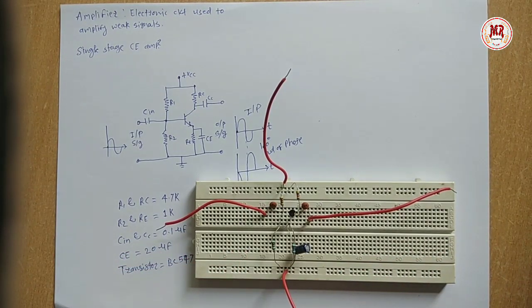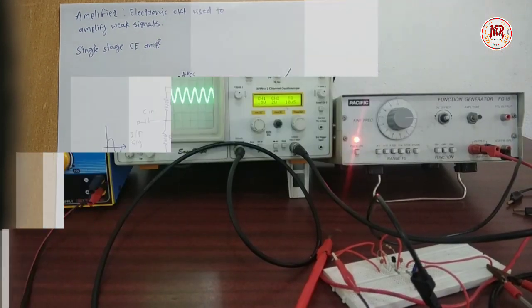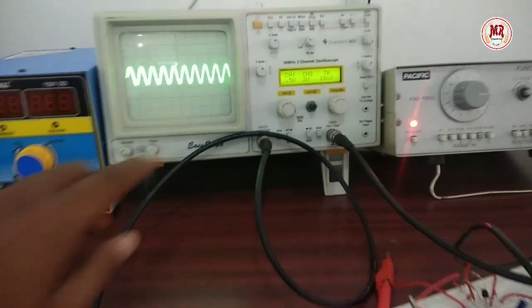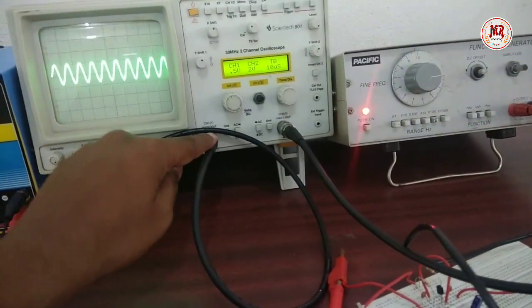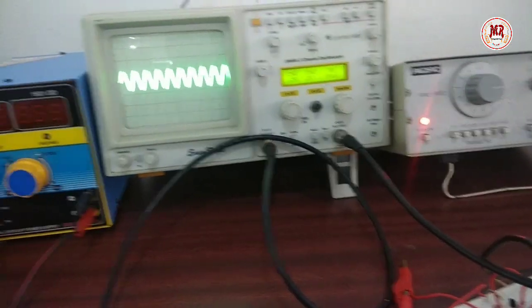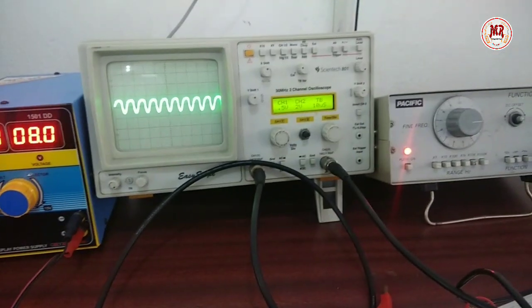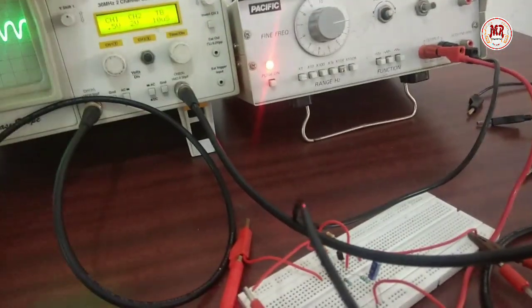Let's check the circuit. Here I used dual channel CRO. This is input waveform. Channel A is used for input waveform. Now turning on DC power supply. Channel B is used to take the output. Output waveform.